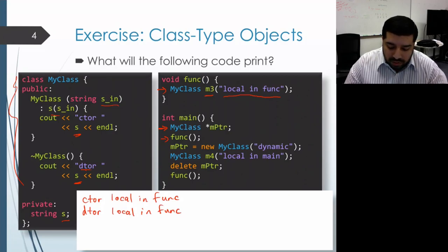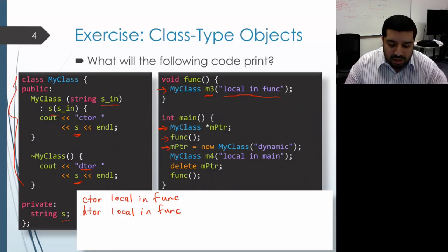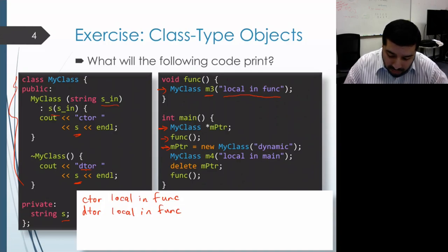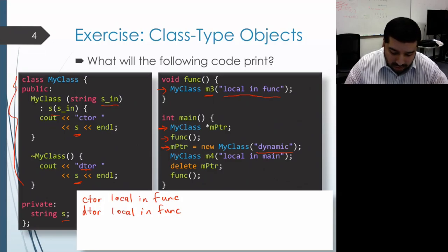Execution returns back to main and proceeds past the call to func. The next line creates a dynamic MyClass object and passes in the string "dynamic". So this invokes the constructor and passes the string "dynamic", which prints out CTOR and then the string "dynamic".